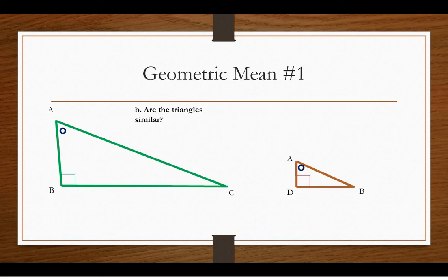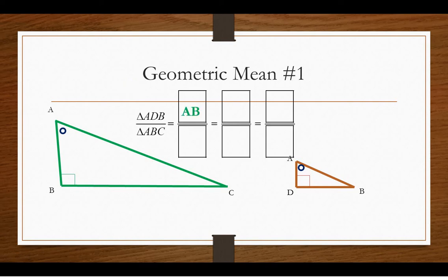Are these triangles similar? Yes, they are, because of angle-angle. They have a right angle in common, and the circles are showing that those are the same. All right, so because they're similar, we can set up proportions. So we know that AB is to AD. It's easy to see when you draw them separately. As AC is to AB, as BC is to DB. Those are proportions that we've been setting up all last chapter.